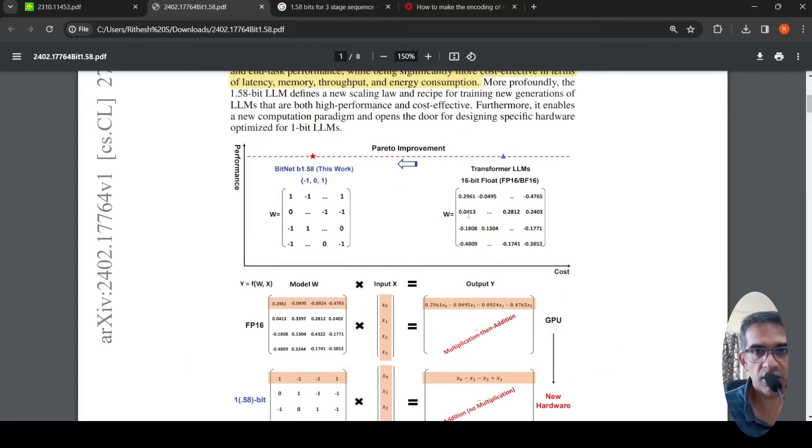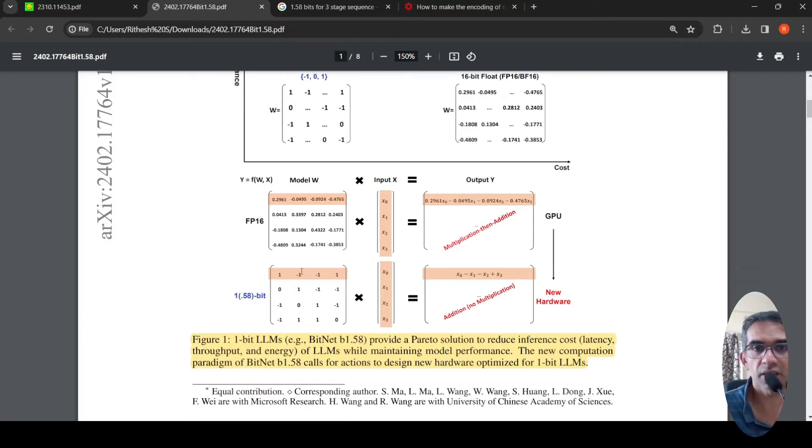So previously you had this 16-bit floating-point weights and there were quantization techniques and other techniques to reduce it to 4-bit float, 5-bit, 3-bit, 2-bit, and so on. And with which you could get performance improvements. But what if the weight can be represented in 1.58 bits?